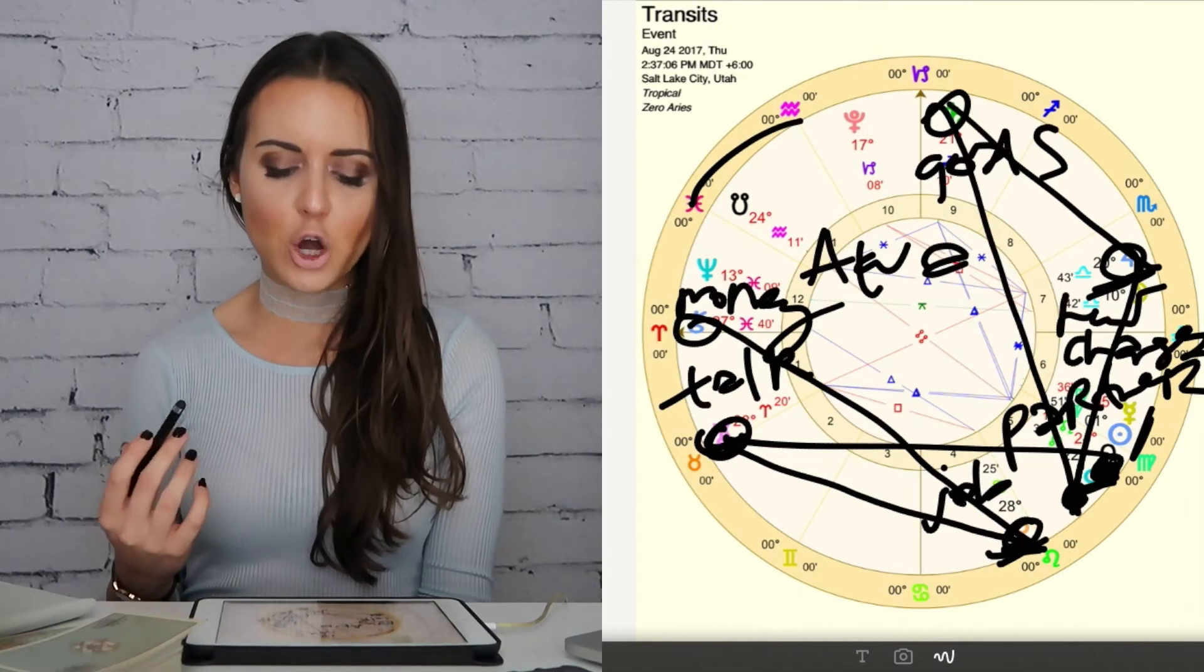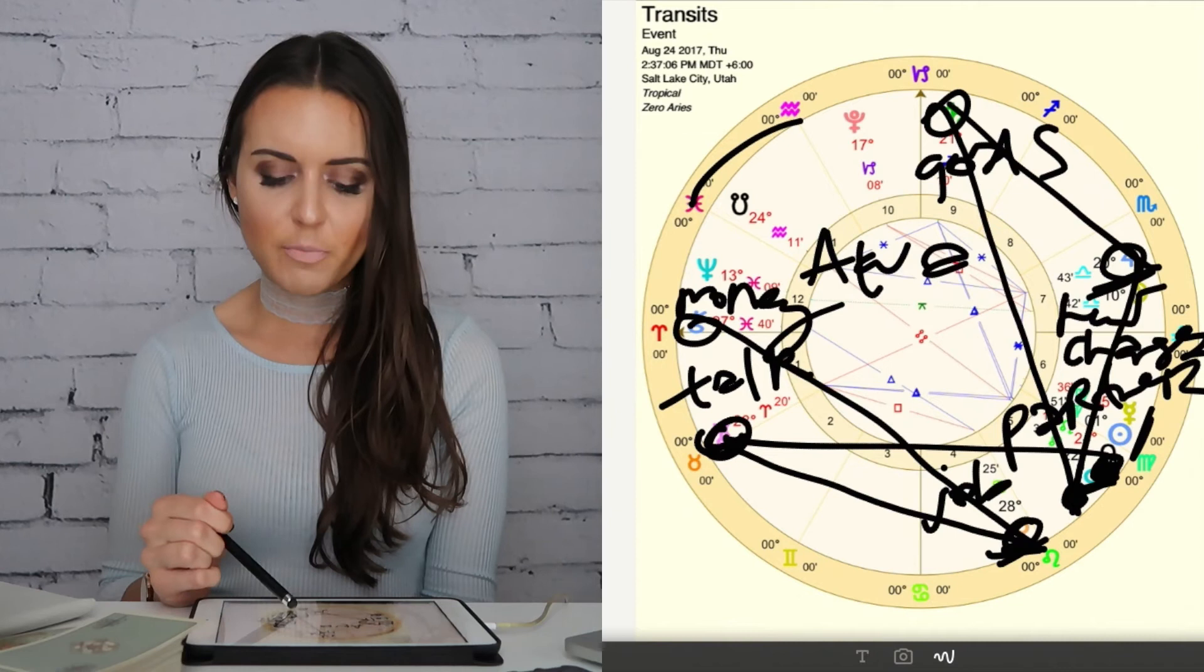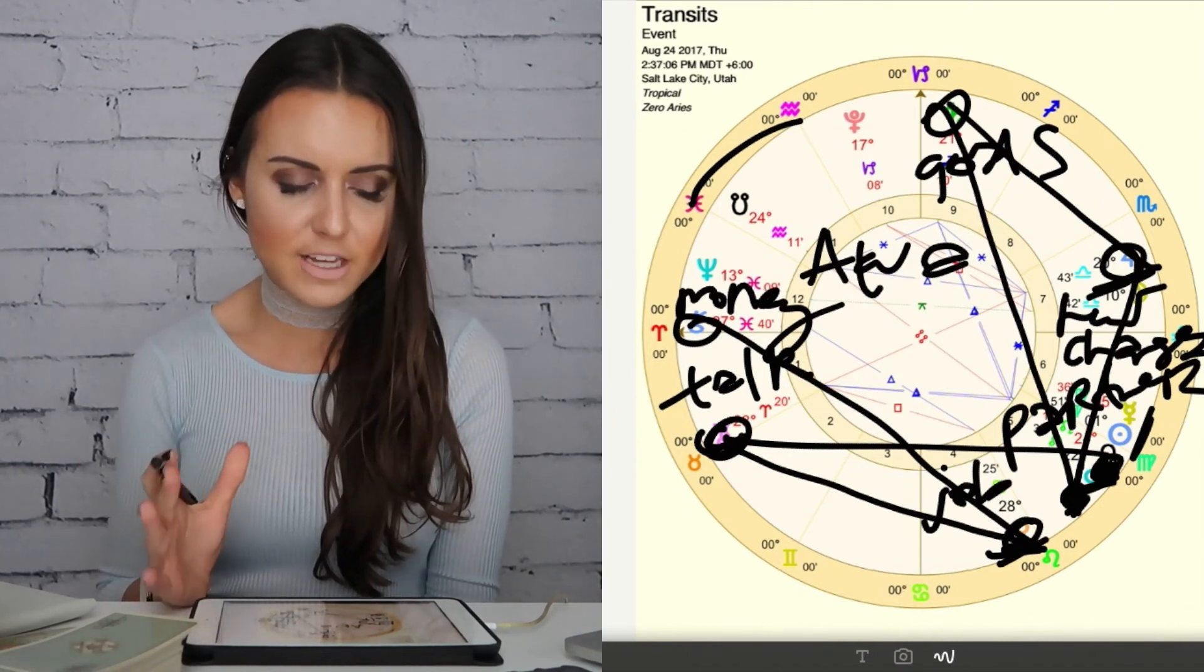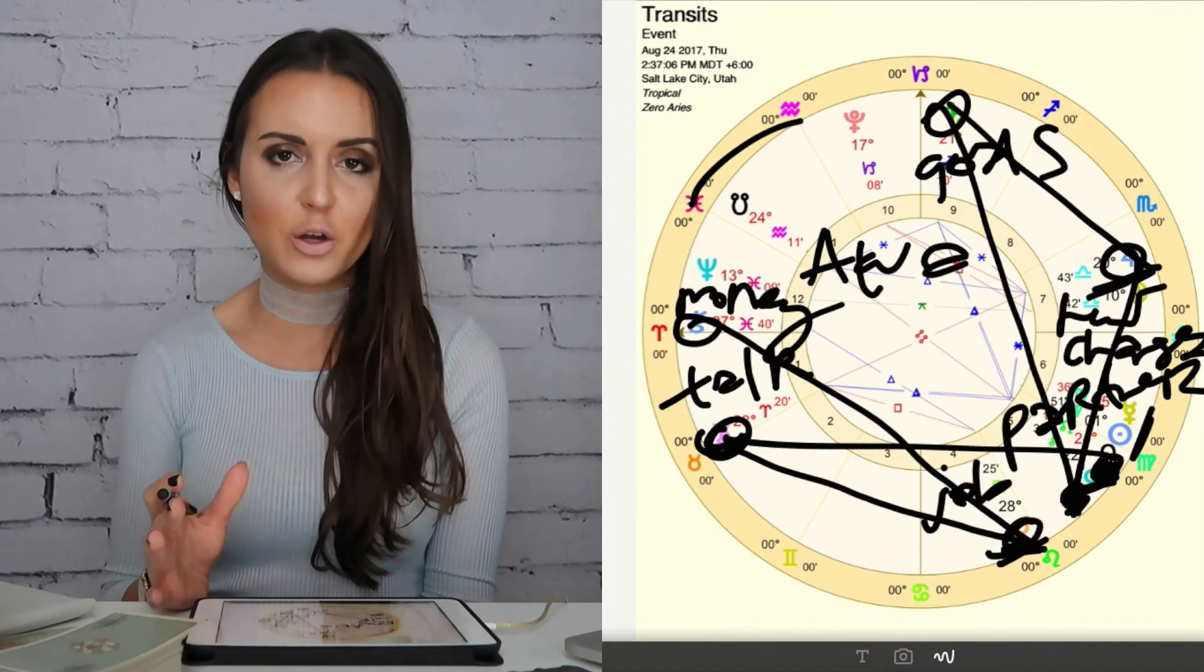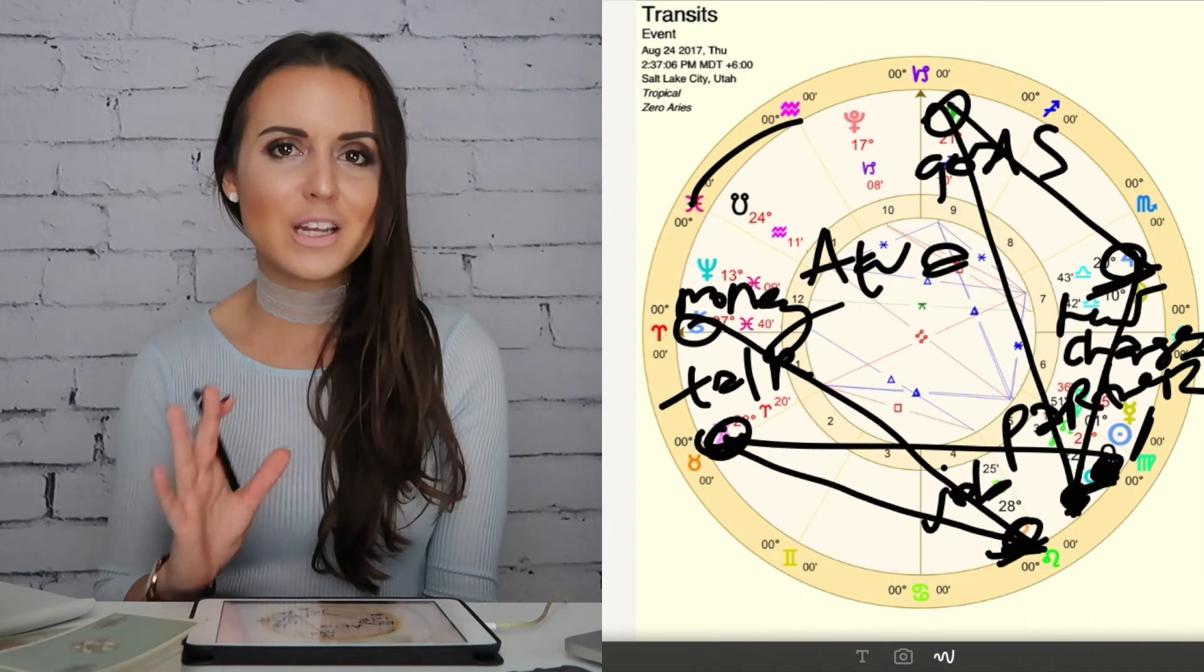While that's happening, we also have Mars in your seventh house of partners going to be conjunct the north node, making you even more serious about other people, a little bit more aggressive in some way to get what it is you want in relationships and commitments.